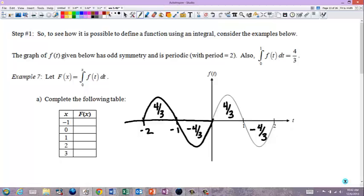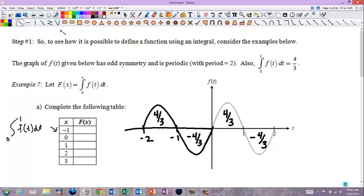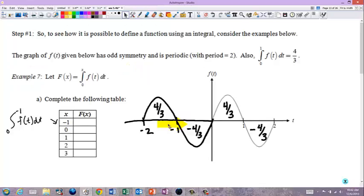So, if I want to find the integral at, if I only want to do negative 1, I would do the integral from 0 to negative 1 of f of t dt. So, from 0 to negative 1. Now, I want you to notice that those are flipped. That's backwards. So, the integral from negative 1 to 0 would be negative 4 thirds. So, from 0 to negative 1, because you're going backwards, is going to be a positive 4 thirds.